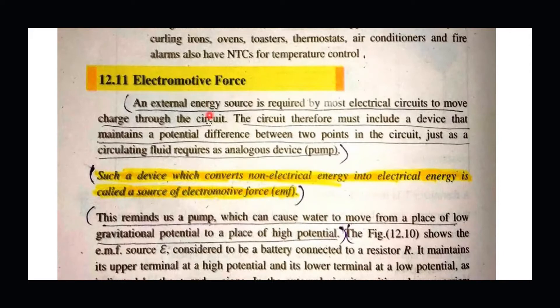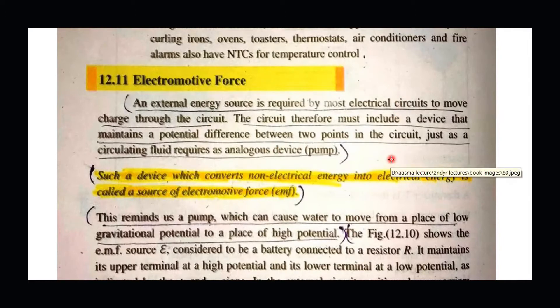There is a motive that your charges move through the circuit. In electrical circuits, for all electrical appliances, we provide an external source of voltage so that our appliances work. That is why we say that an external energy source is required for electrical circuits to move the charge through the circuit.